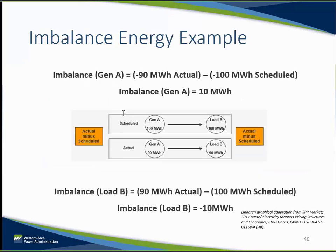Now we will walk through some examples demonstrating how an energy imbalance market works. This diagram shows what energy imbalance is. In this example, Generator A was scheduled to provide 100 megawatt hours to Load B, but in reality, Generator A only provided 90 megawatt hours to Load B, so there was a 10 megawatt hour energy imbalance. This 10 megawatt hours of imbalance is what the energy imbalance market would solve for. Since the load is less than what was scheduled, the load would be subject to energy imbalance charges.